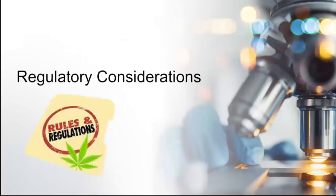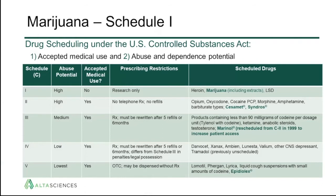Marijuana continues to be a Schedule I compound in the United States because it does not have a federally accepted medical use. Whereas drugs like Cesamet, Syndros, Marinol, and Epidiolex have all become lesser-scheduled because they have an approved medical use and some degree of abuse potential. Epidiolex is one of the lowest on the scheduling system, and these are referred to as accepted medical use drugs — therefore having a differential schedule from marijuana, which sits in Schedule I.